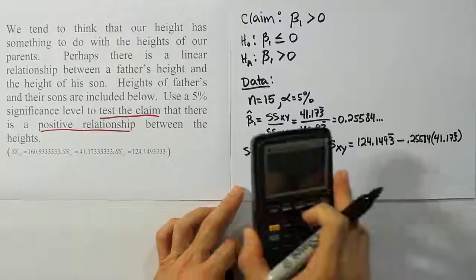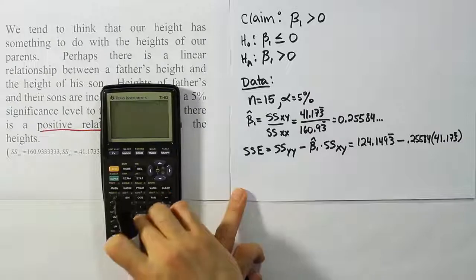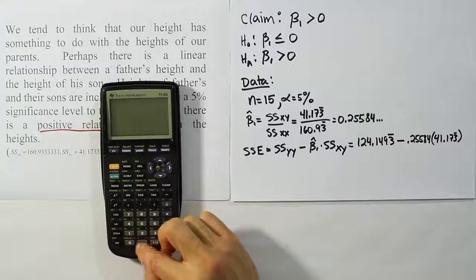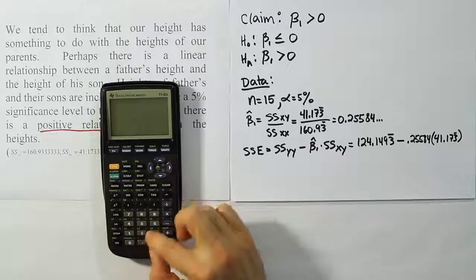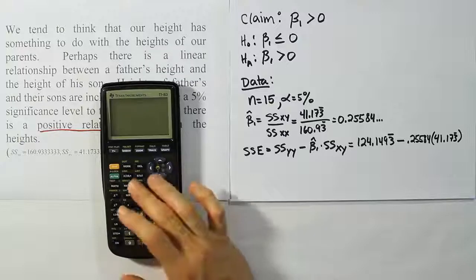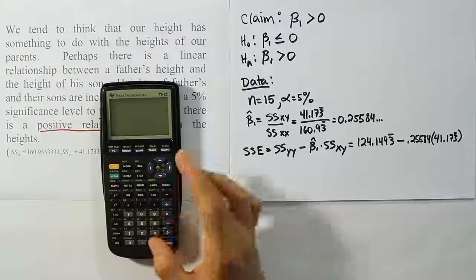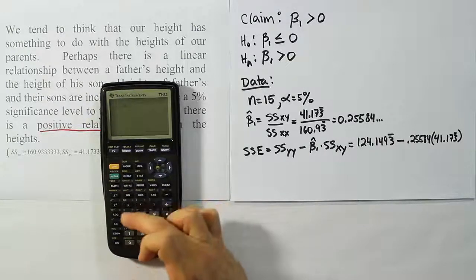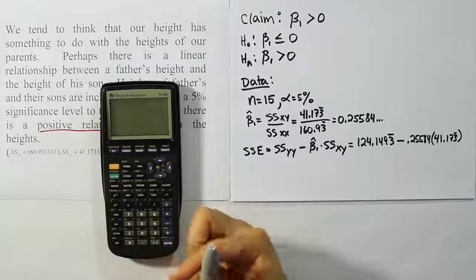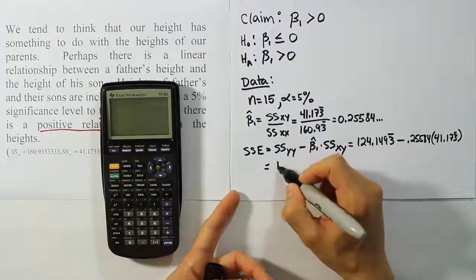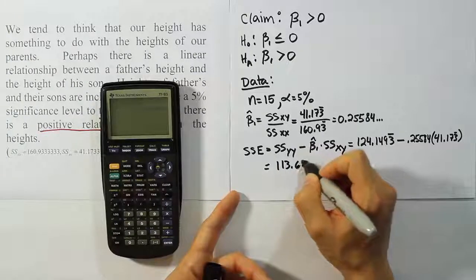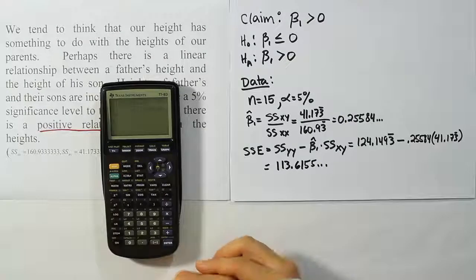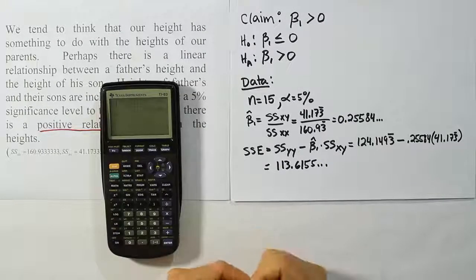Alright, let's work that out and see what that gives us as well. Okay, so we'll have 124.1493 repeating minus our point estimator for the slope, which I've stored in my calculator as X, times 41.173 repeating. When you do all that, you get the answer, 113.6155 and so on. Okay, so basically 113.6155, on and on and on.